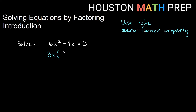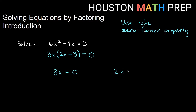So 3x is the greatest common factor overall. 3x times what gives us 6x²? 3 times 2 gives us the 6, and x times x gives us x². 3x times what gives us negative 9x? 3 times negative 3 gives us the 9, and we already have the x out here. So if I factor out the greatest common factor, I get 3x times (2x minus 3) equals zero. I have two things multiplying together giving me zero, so setting each factor equal to zero gives me my answers.